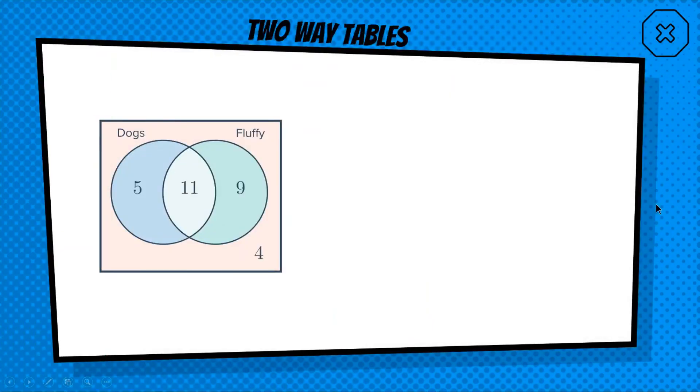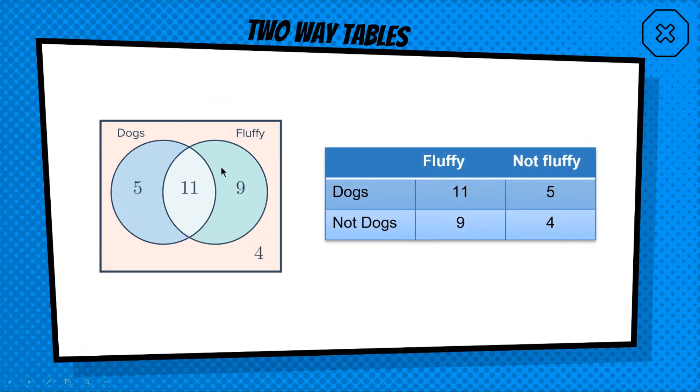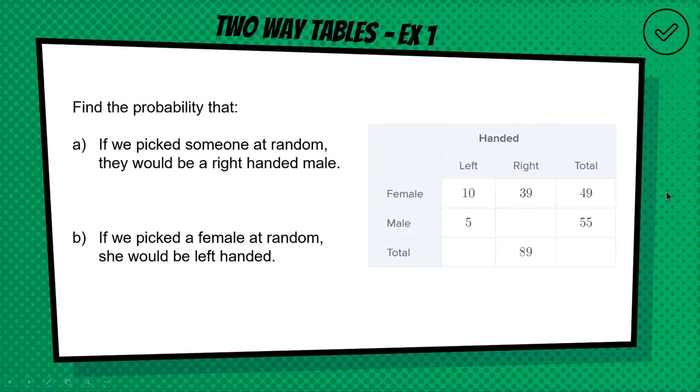All right, next thing we're looking at is two-way tables. This is an alternative way of talking about categories similar to a Venn diagram, just without the circles. So here is a two-way table relating to our fluffy dog example from before. Okay, so we've got the categories across the top. We've got fluffy and dogs is the overlap, that's the 11. We've got dogs that are not fluffy is the 5 out here. Okay, dogs but not fluffy. We've got fluffy and not dogs is the 9. Okay, it's in this circle but not in this circle. And they're not fluffy, not dogs is outside of both circles, which is the 4. Okay, so looking at these two, make sure you understand where I'm getting these four numbers from and how they relate to this diagram.